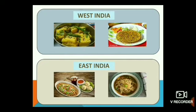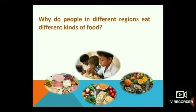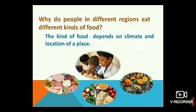Puri and sabji are also popular in almost all parts of the country. Why do people in different regions eat different kinds of food? Because the kinds of food depends on the climate and location of a place. What did we learn today? We learned about different food items popular in different geographical regions of India, and also some other popular food items.